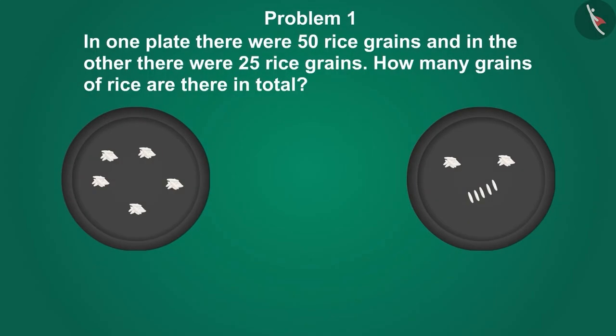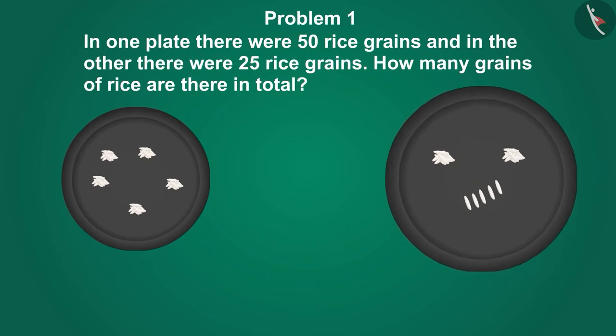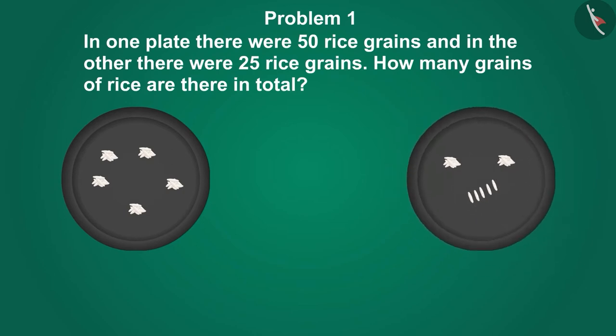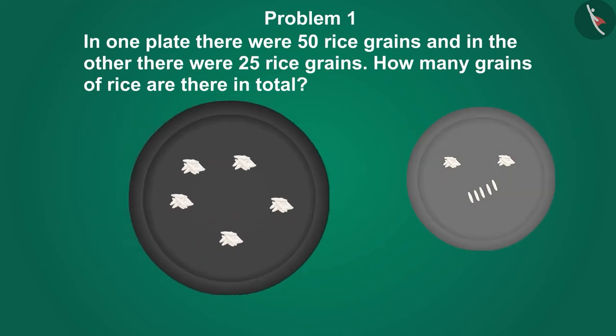In one plate there were 50 rice grains and in the other there were 25 rice grains. How many grains of rice are there in total? Come, let's see what we have to do first. One has 50 and the other has 25 grains. Come, let's look at the plates.